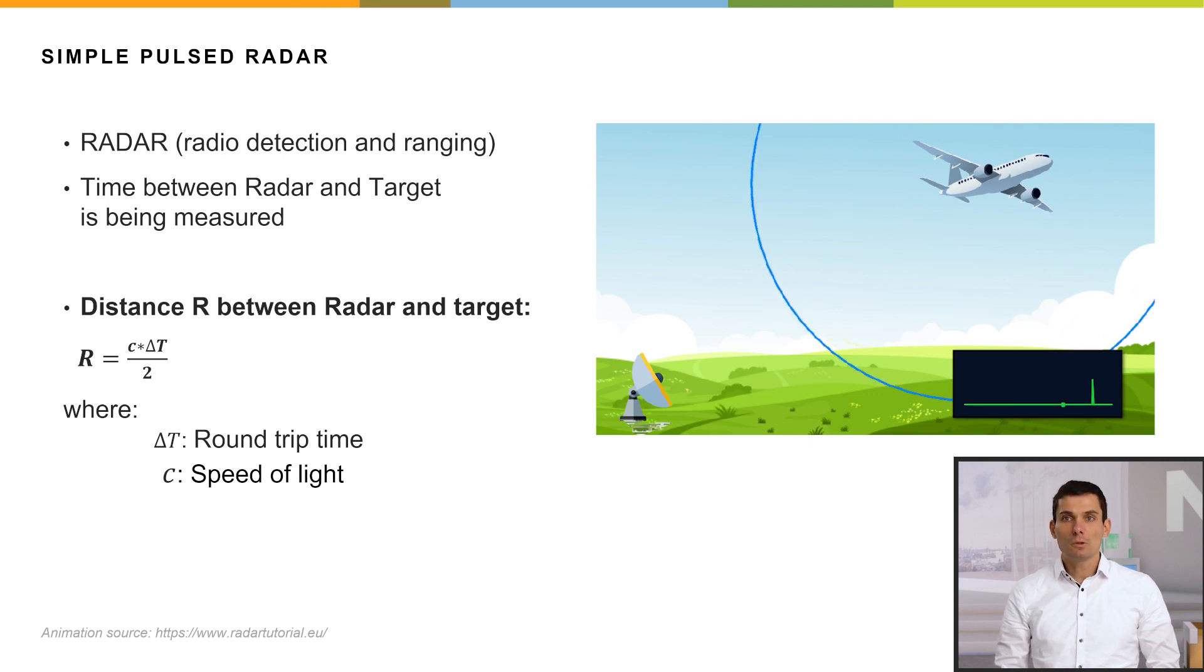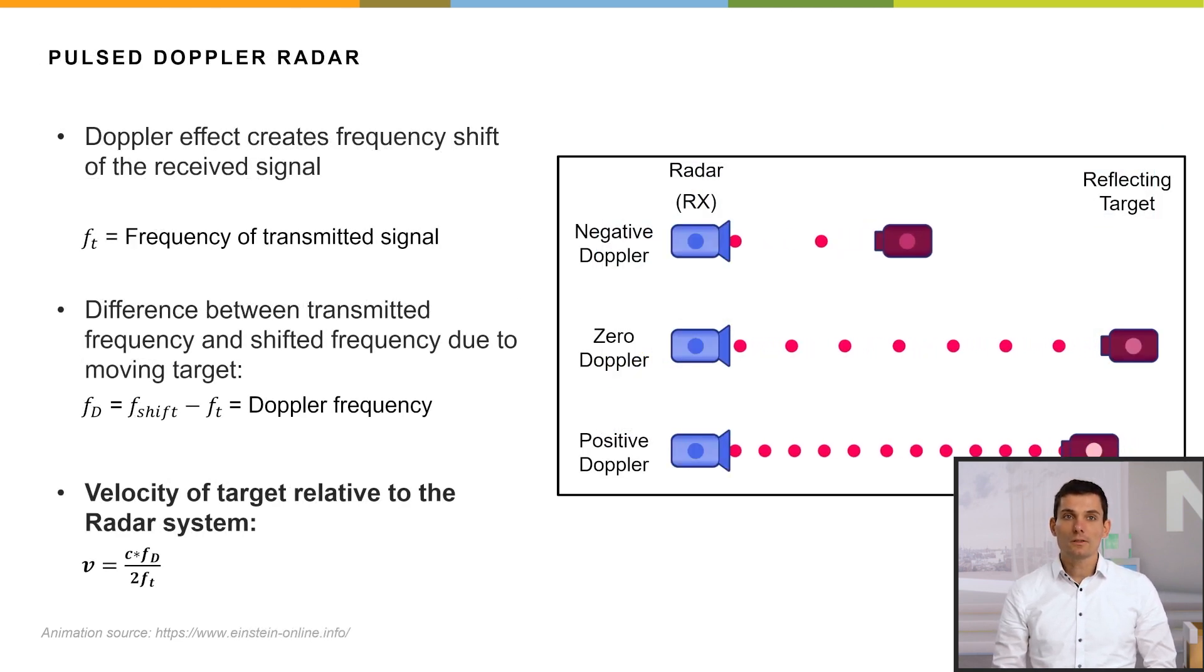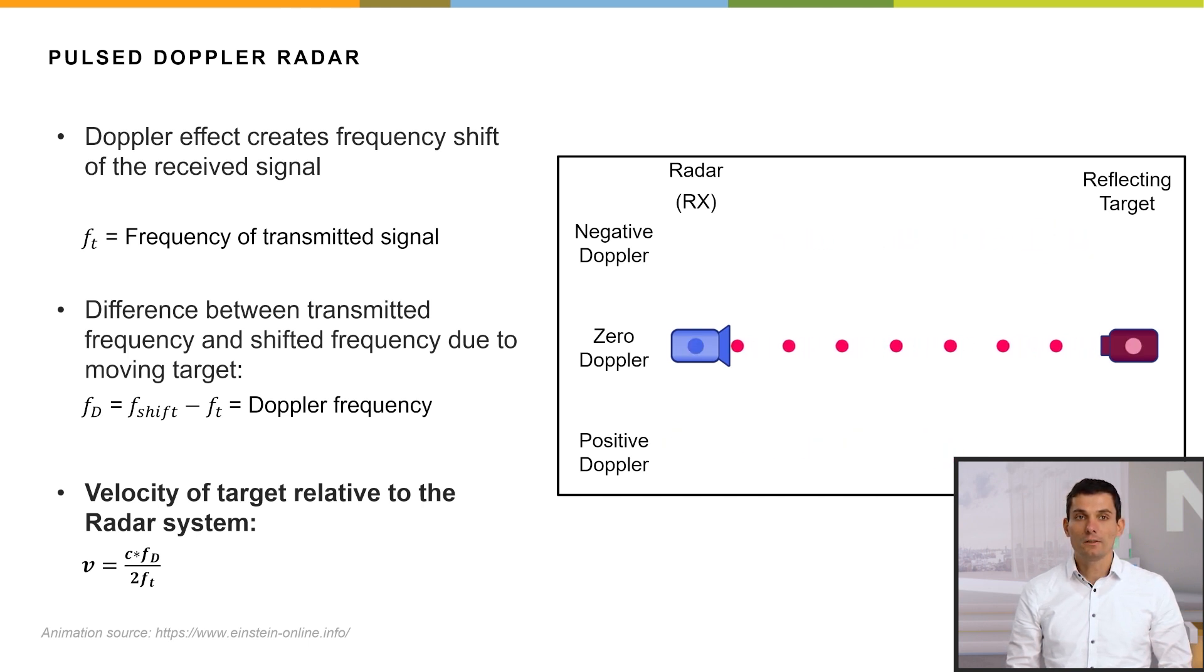If we don't want to measure the distance, but rather the velocity, we can use a so-called pulse-doppler radar, where the velocity of the target can be measured by measuring the Doppler frequency. You see that the velocity of the target relative to the radar system can then be calculated.